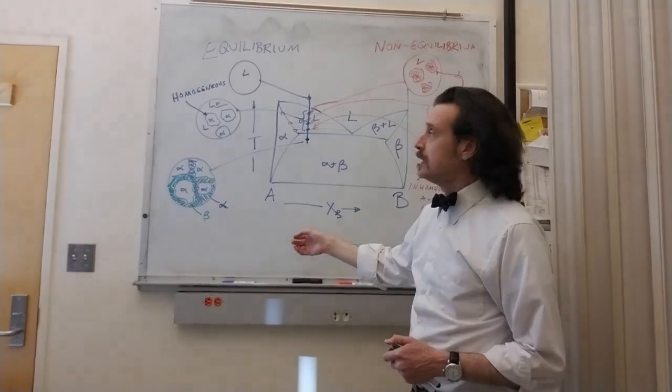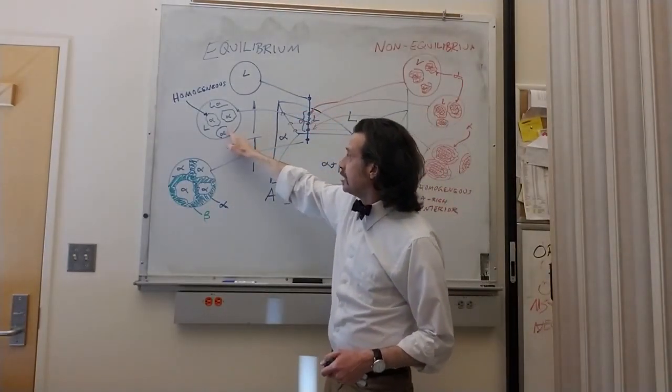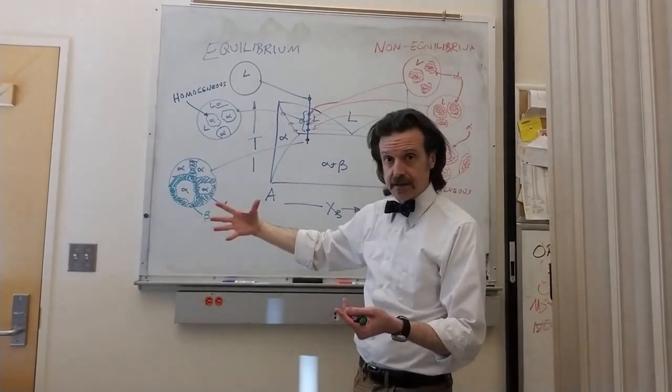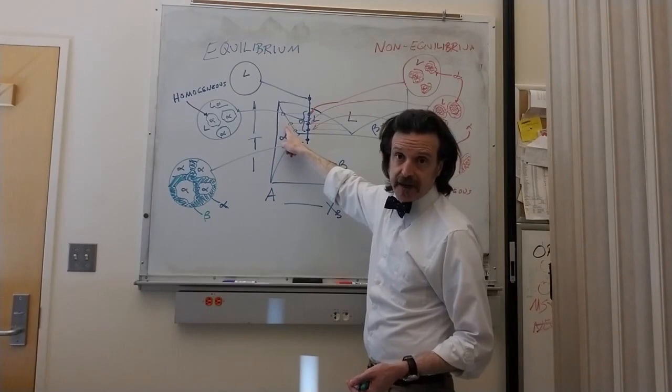Our assumption is that at any point here, this alpha in its entirety is given by the intercept of the tie line and the phase boundary.